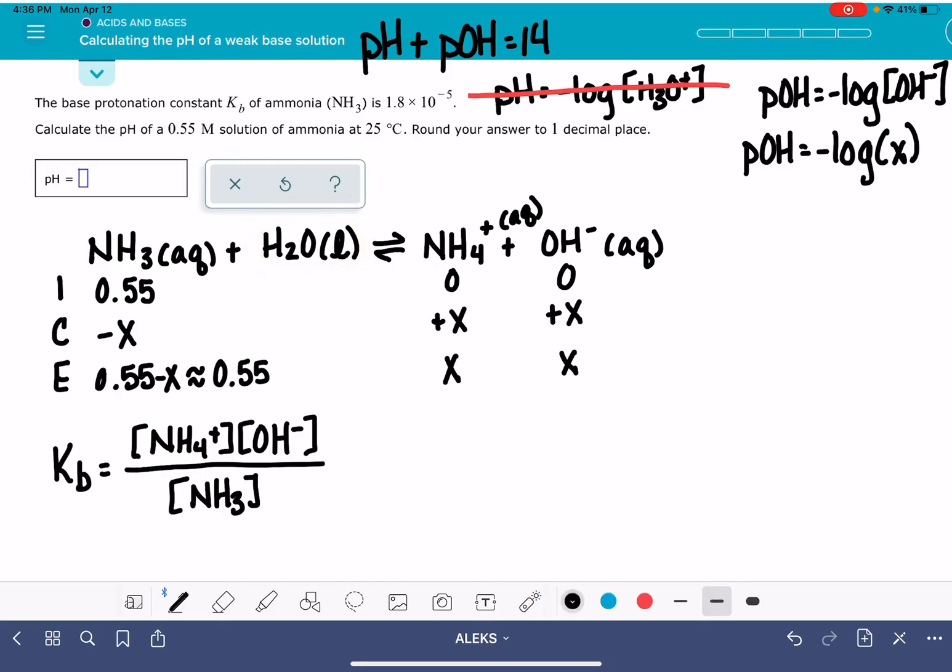We can plug in our value of Kb. The value of Kb is 1.8 times 10 to the minus 5. The problem gave us that information. Plug in the values of our two products. They're both represented by X, so that's X squared. Then plug in the value of our reactant, 0.55.